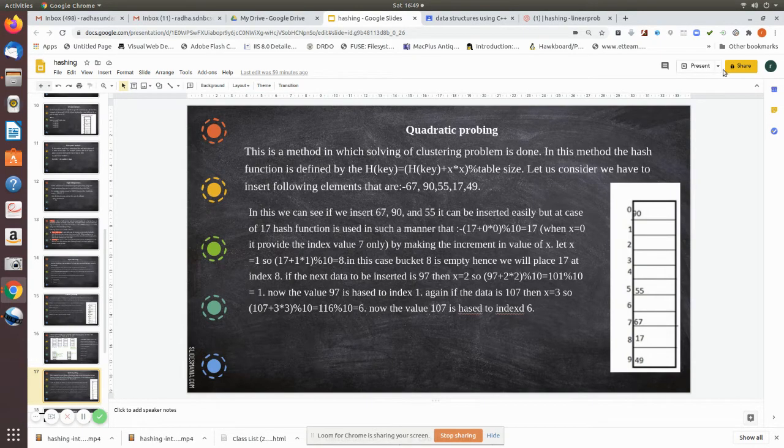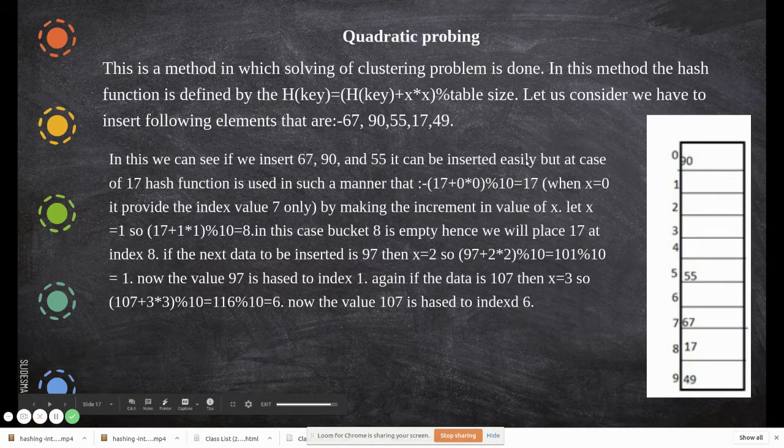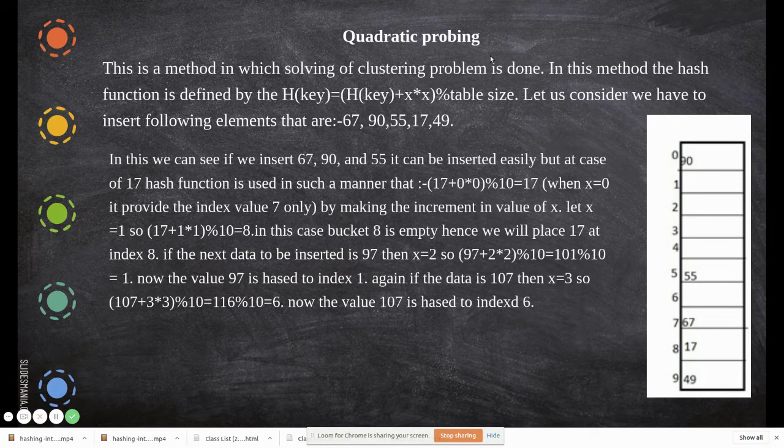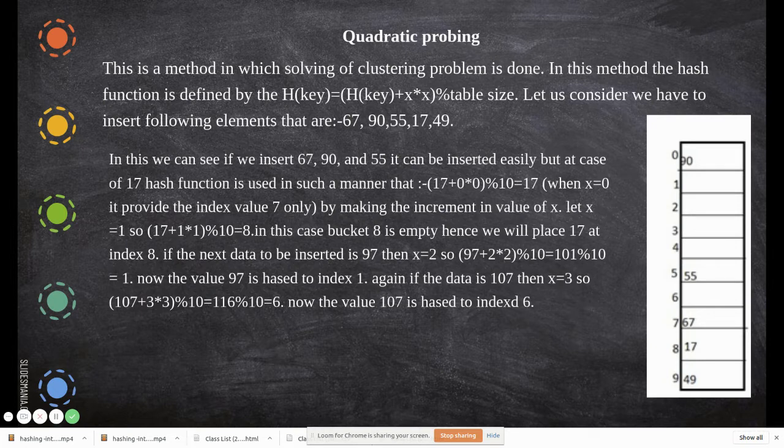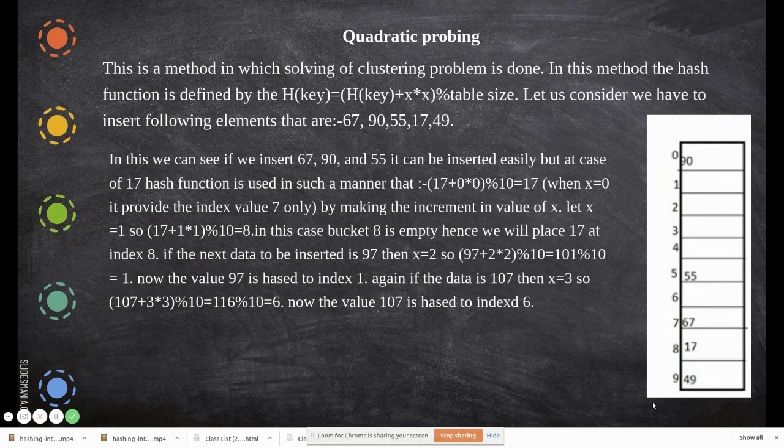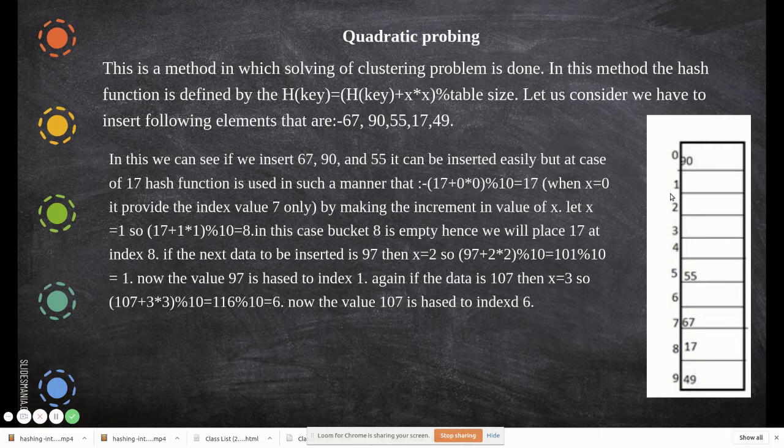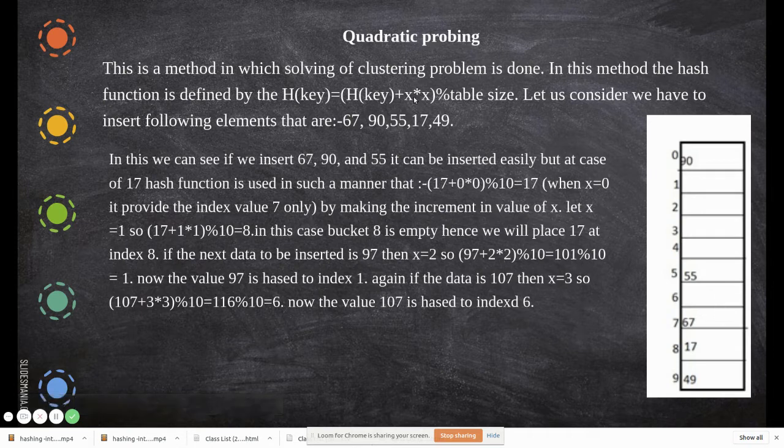The next topic is handling collision using quadratic probing. We've already seen linear probing, where when there is a collision, the data is placed in the next available memory. Quadratic probing is another method where the hash key is modified by adding x squared. For example, with an array from 0 to 9, you first take x value to be 0 (so 0×0), then 1, then 2, and so on. Since you're multiplying with the same element (x squared), this is called quadratic probing.